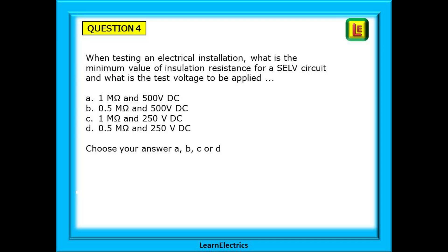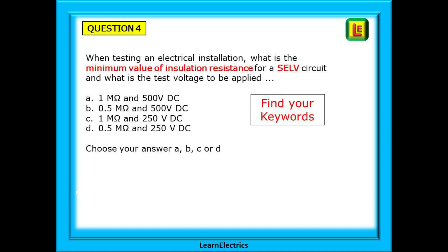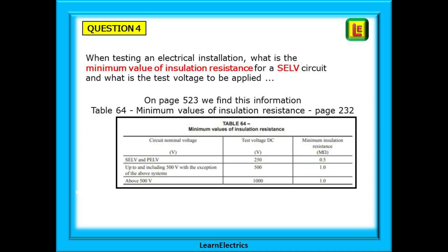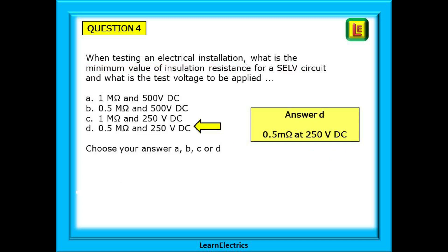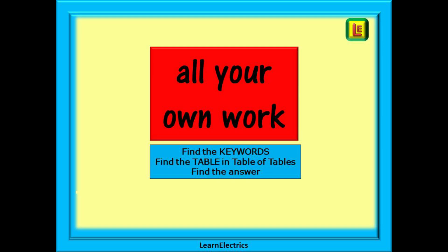On to question 4. When testing an electrical installation, what is the minimum value of insulation resistance for a SELV circuit and what is the test voltage to be applied? Choose your answer from the four offered. Find the keywords. On page 523, we find Table 64, 'Minimum values of insulation resistance', and it tells us to go to page 232. Here is the table — almost every exam will ask you a question on this table. Use the keyword to find the SELV row and there is your answer. We should choose answer D: 0.5 megaohms and 250 volts DC.